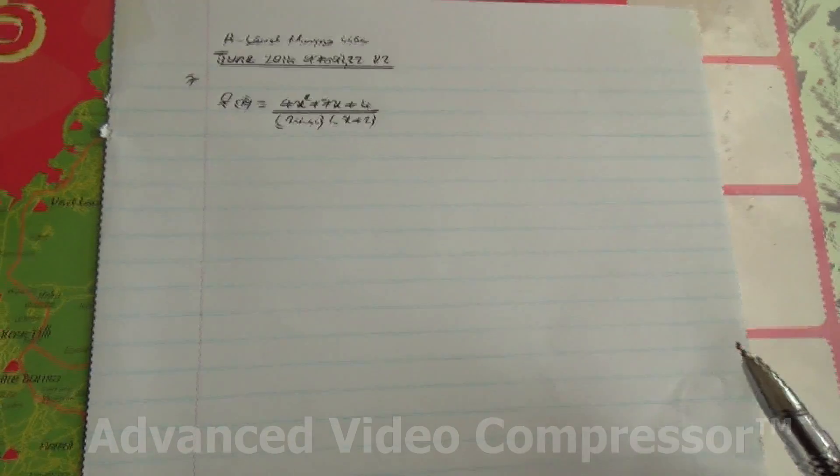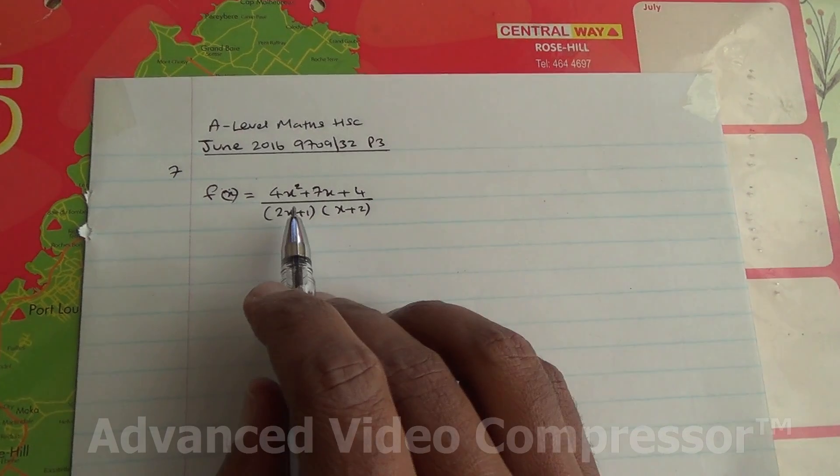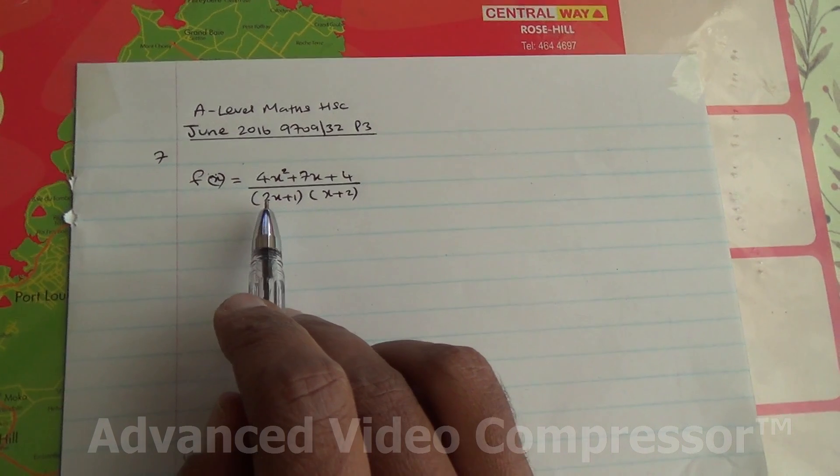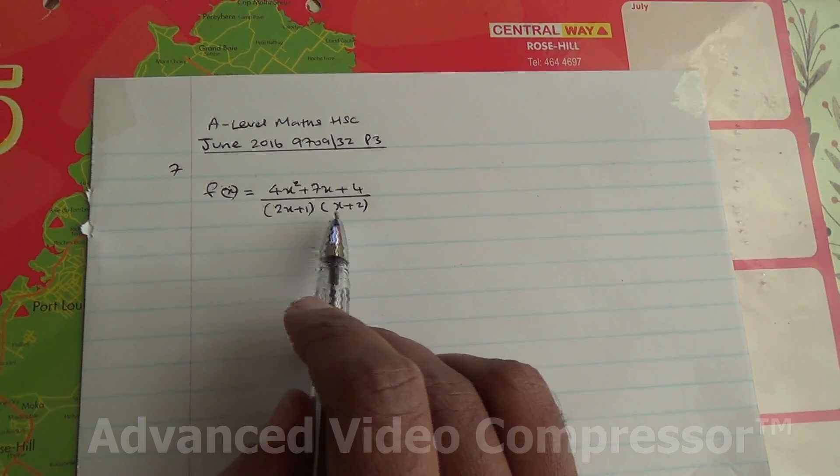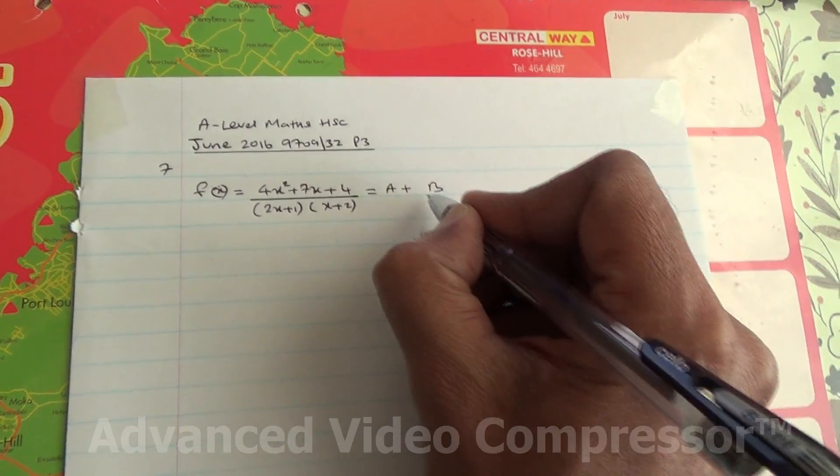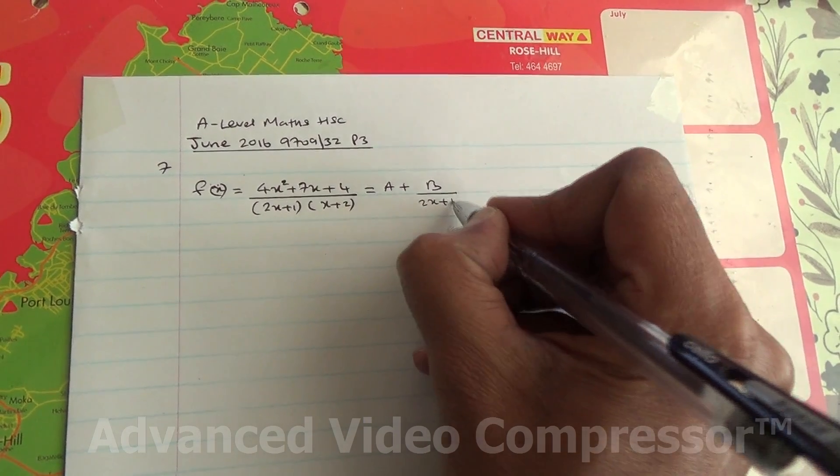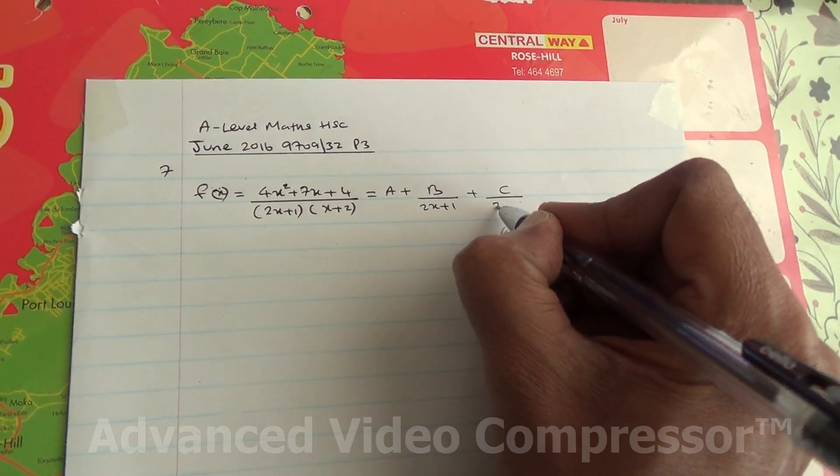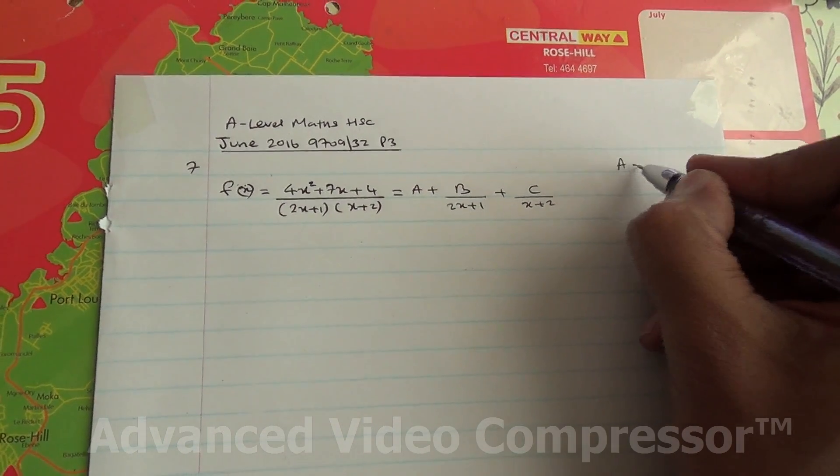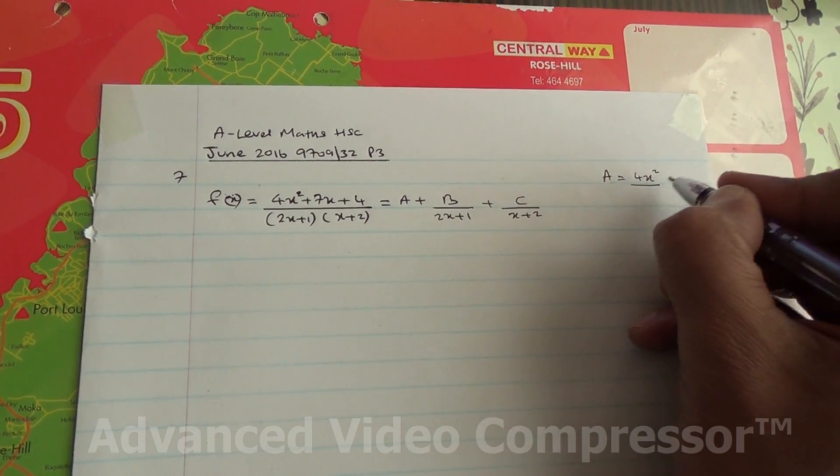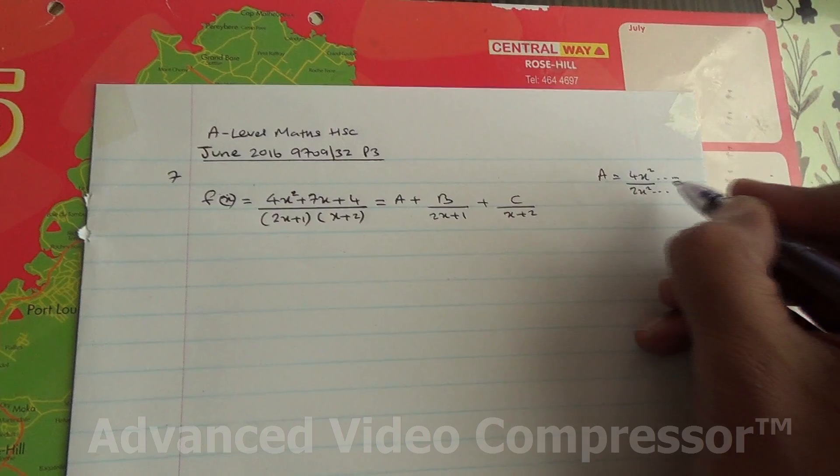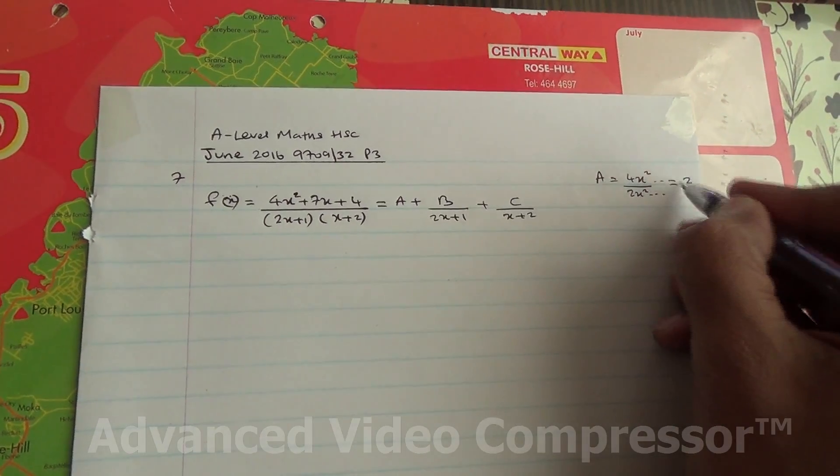So here we are. Now, what we can observe is that this expression has the same degree with the denominator, because 2x times x is 2x squared. So we can express this as A plus B over (2x plus 1) plus C over (x plus 2). A needs to be found. 4x squared divided by 2x times x is 2x squared, and this will go on like this. So that's going to be 2. We've got A as 2.